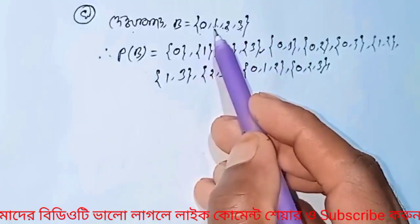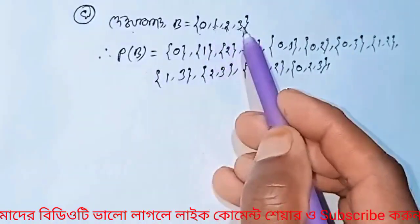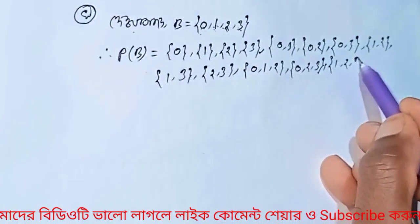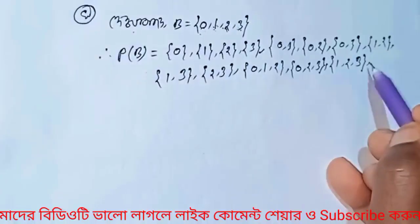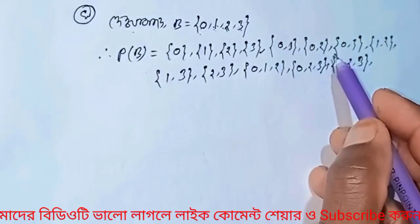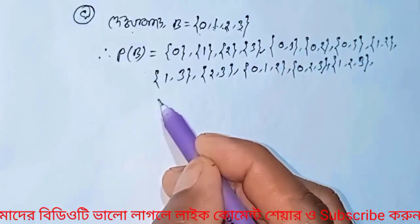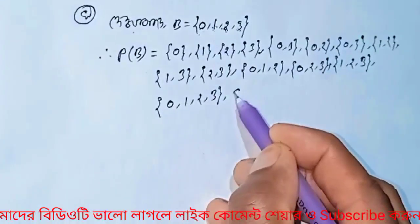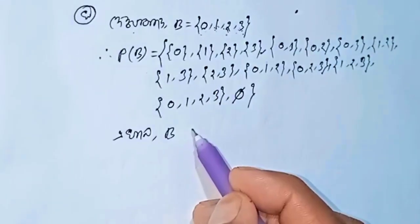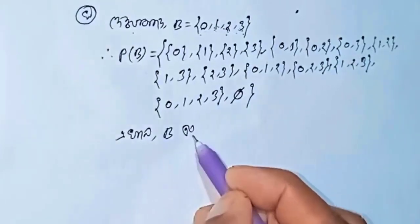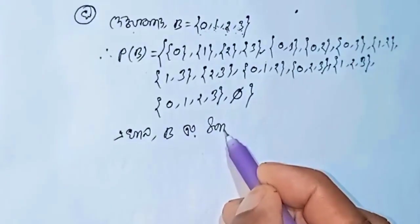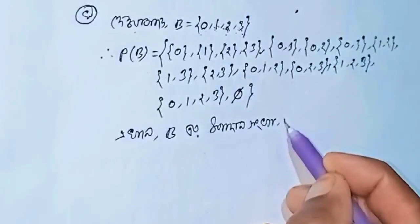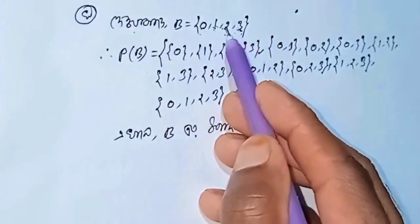For a little bit: 1, 2, 3. Meaning 1, 2, 3. 1, 2, 3. For a little bit 1, 2, 3. 0, 1, 2, 3. Set select vector. For a little bit. 1, 2, 3. N equal 4. 1, 2, 3.